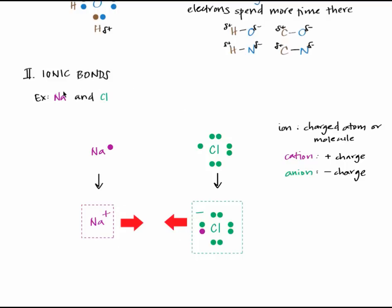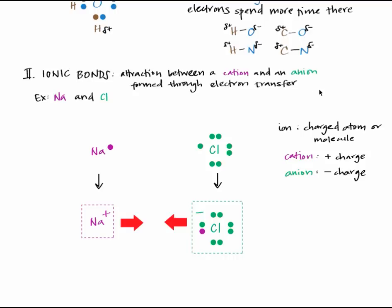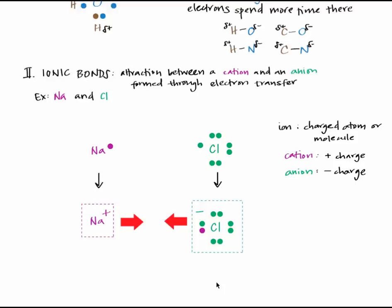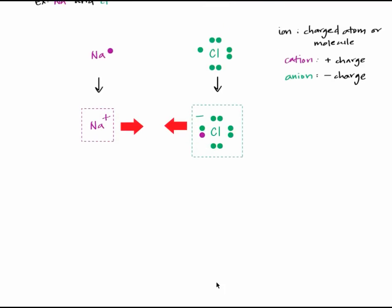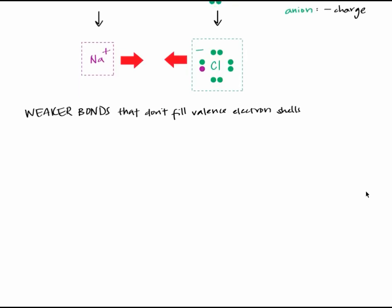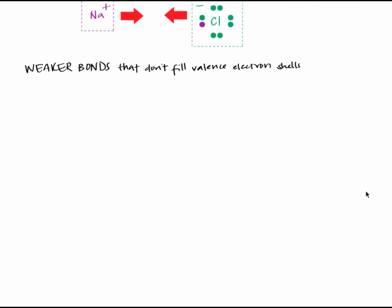An ionic bond is the attraction between a cation and an anion, where that cation and anion were formed through electron transfer. This is the type of bond found in acids, bases, and salts. Ionic and covalent bonds are the strongest types of bonds, because they allow atoms to achieve a full valence electron shell and thus maximum stability. However, there are other weaker types of bonds that are common in biology but don't fill valence electron shells.